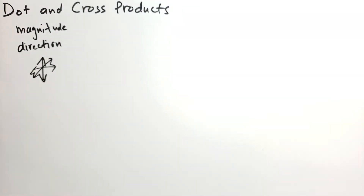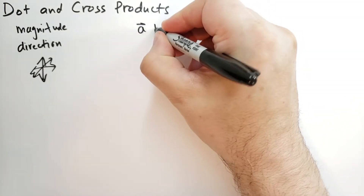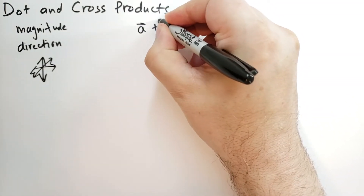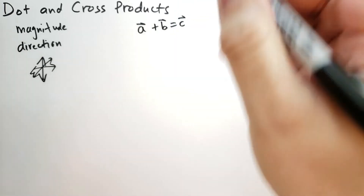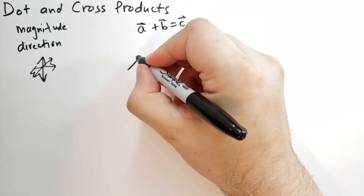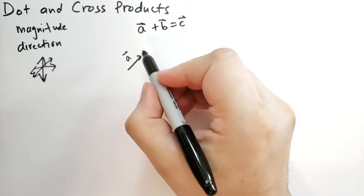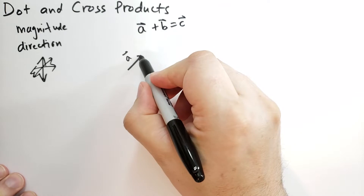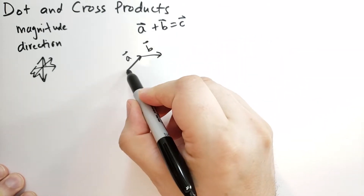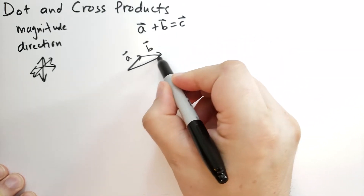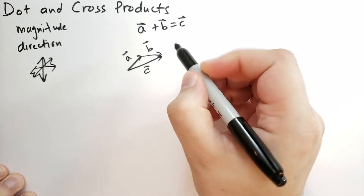As you probably already know, you can add vectors. A vector plus B vector equals C vector. What this means is you start with an A vector somewhere, then you align the B vector thusly, and the C vector runs from the beginning of the A vector to the end of the B vector.